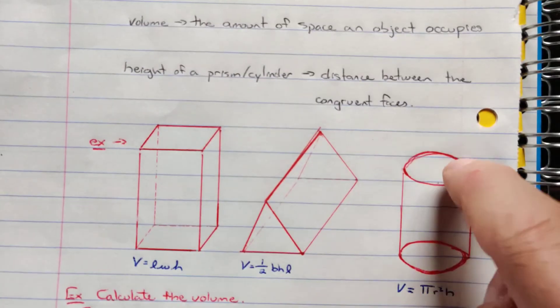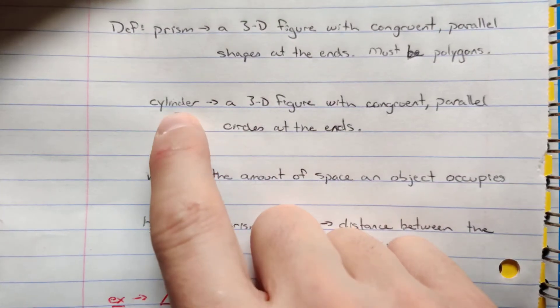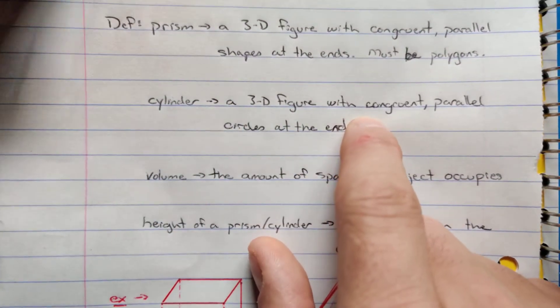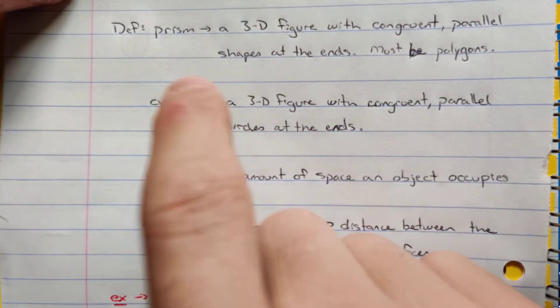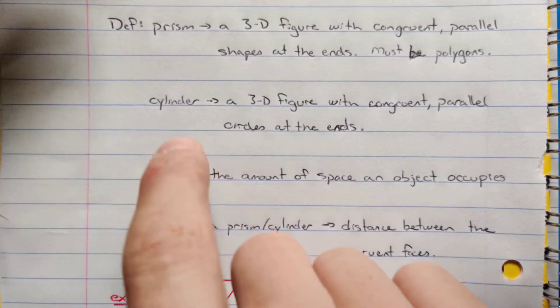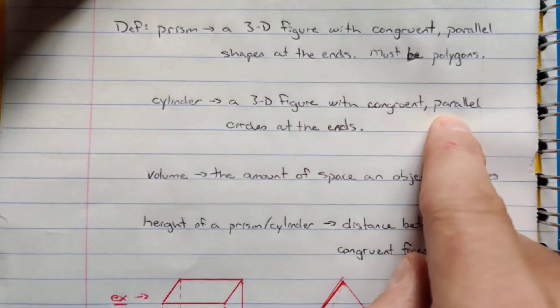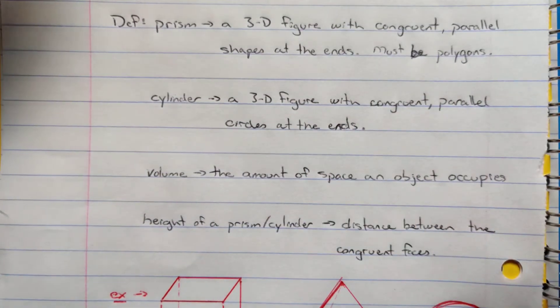Now, this here, when we have some round shapes on either end, well, now we're talking about a cylinder. So it's similar to a prism, except, just like we often call the perimeter of a circle circumference, we treat circles separately from straight line shapes. We treat the 3D model the same. So it's called a cylinder. It's a 3D figure with congruent and parallel circles at the end.